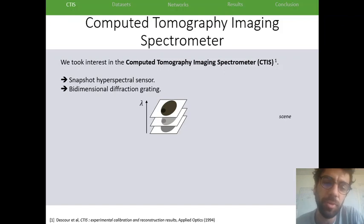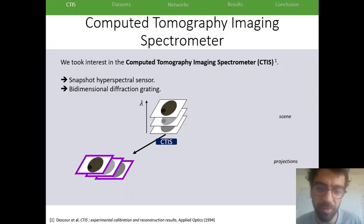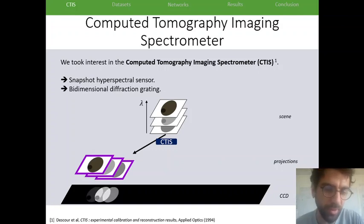What it means is that if you have your scene you wish to acquire with the third dimension being the spectral one, then the action of this CTIS is that it's going to displace the different spectral slices as a function of the wavelengths, which is what we call a projection. And so if you put a CCD underneath, then you get different spectral slices information with some partial overlap.